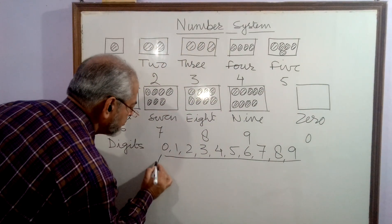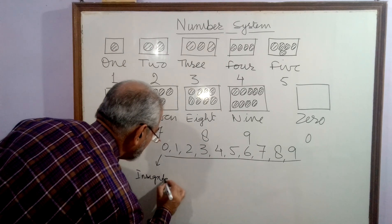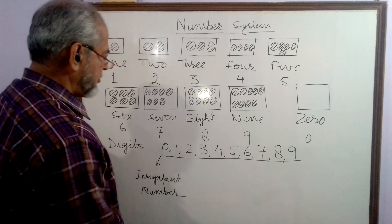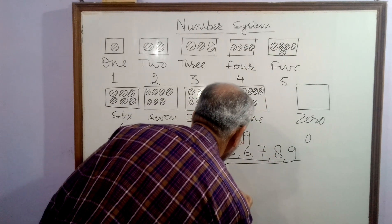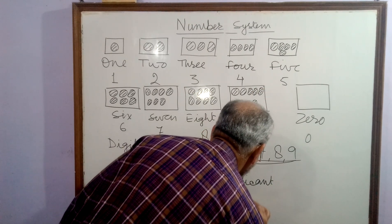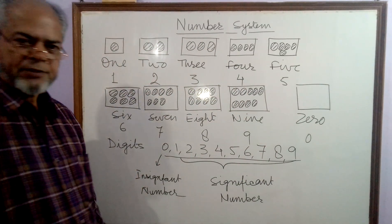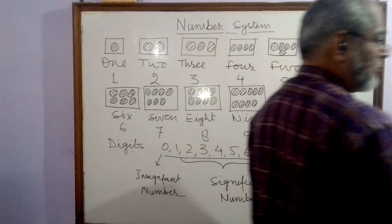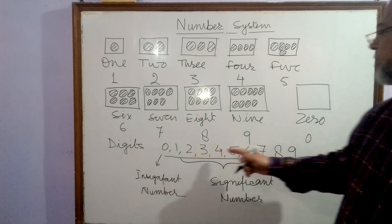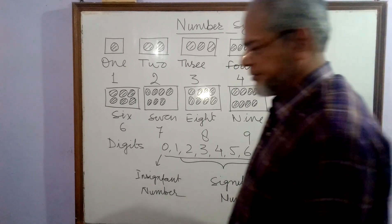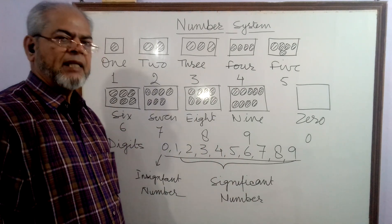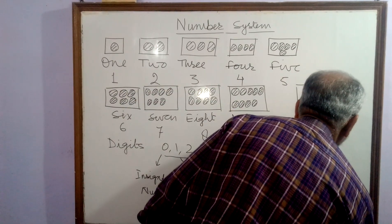Zero is called an insignificant number, and the rest of the numbers — one, two, three, four, five, six, seven, eight, nine — are called significant numbers. They are also called counting numbers. By these digits we can form any number, for example 234.